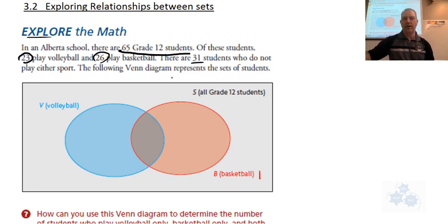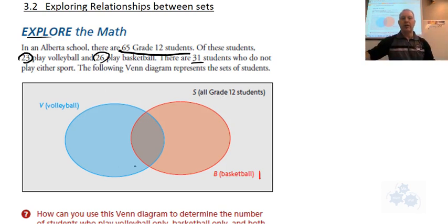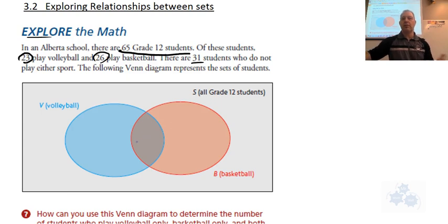The following Venn diagram represents the sets of students. We've got all the grade 12 students as the universal set — the total sample space. We have a circle here as a region for the volleyball players, and a region for the basketball players as well. We want to start placing numbers inside this Venn diagram.